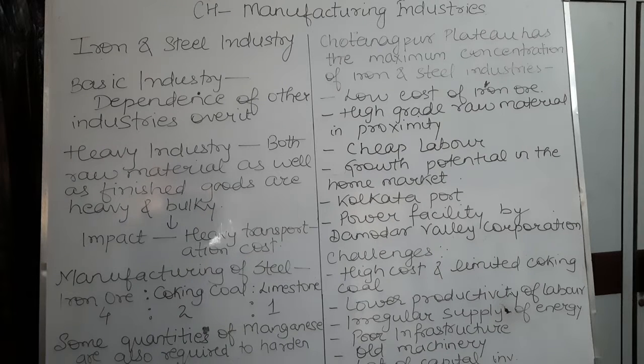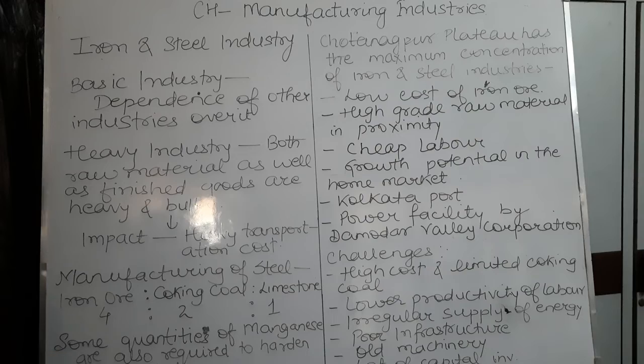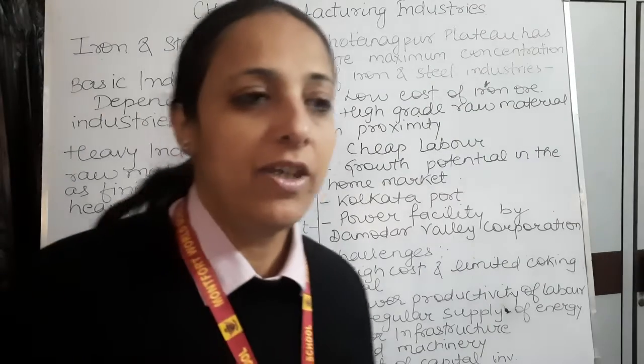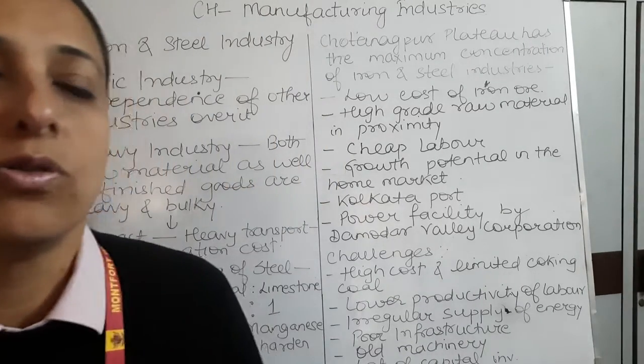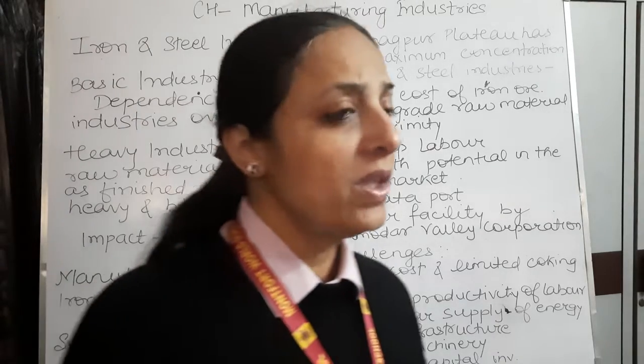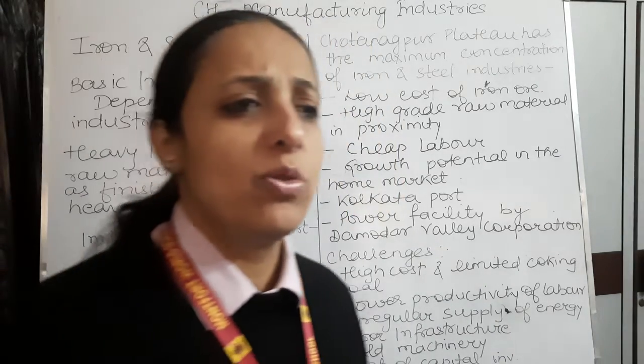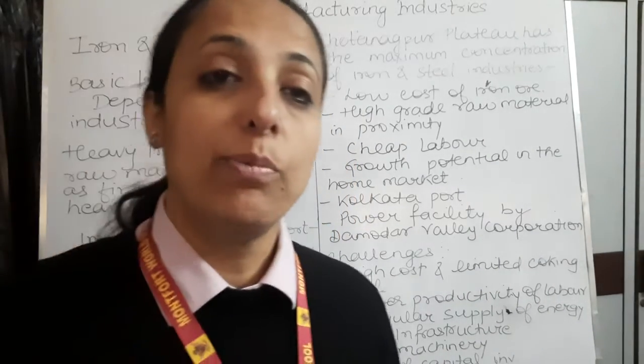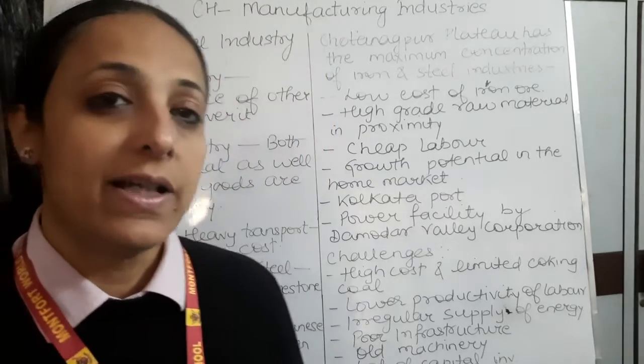Iron and steel is a heavy industry because both the raw material and the finished products are very heavy and bulky. Iron ore and all raw materials are very bulky, and the finished products are also very bulky. Steel is required for manufacturing so many things — in construction activities, medical equipment, scientific equipment, and defense-related equipment.